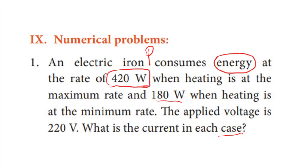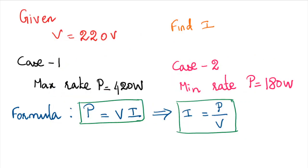First, we write the given values. Case 1 — at maximum rate — power P₁ = 420 watts. Case 2 — at minimum rate — power P₂ = 180 watts. The voltage V = 220 volts. The formula that relates V, I, and power is: power equals voltage multiplied by current, so P = V × I.